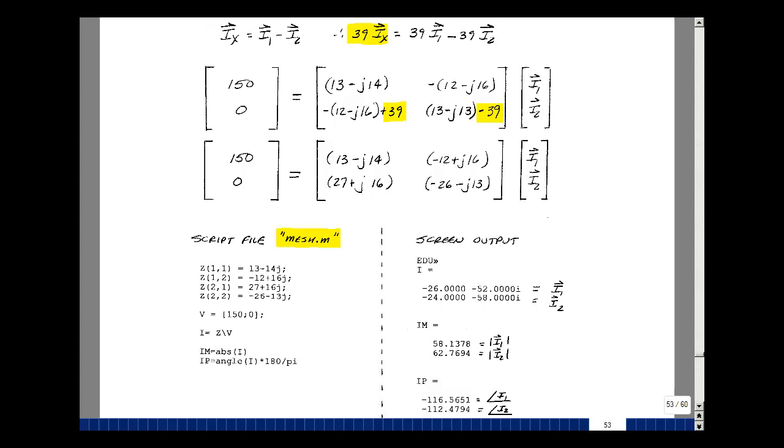Okay, now we'll turn to MATLAB and have it solve for I1 and I2. Let's see, let's write a script file called this mesh.m. And I'll give it the matrix first. So here's Z11. So Z parentheses 1 comma 1. That's 13 minus 14J. Semicolon, so when we run this, we won't get the echoing of what we just put in, as we can see it, 1, 2 is minus 12 plus 16J. Row two, column one, 27 plus 16J. And then row two, column two, minus 26, minus 13J. Our voltage vector is 150 in row one, column one, and zero in row two, column one. And then we can solve for I as the impedance matrix Z backslash, this is matrix division, V.